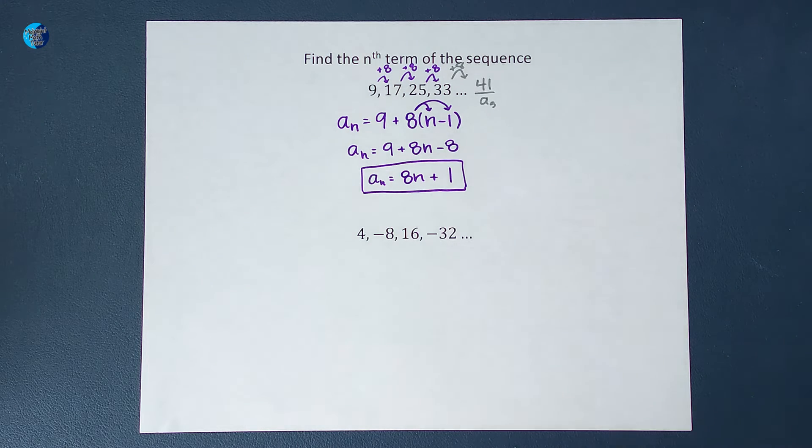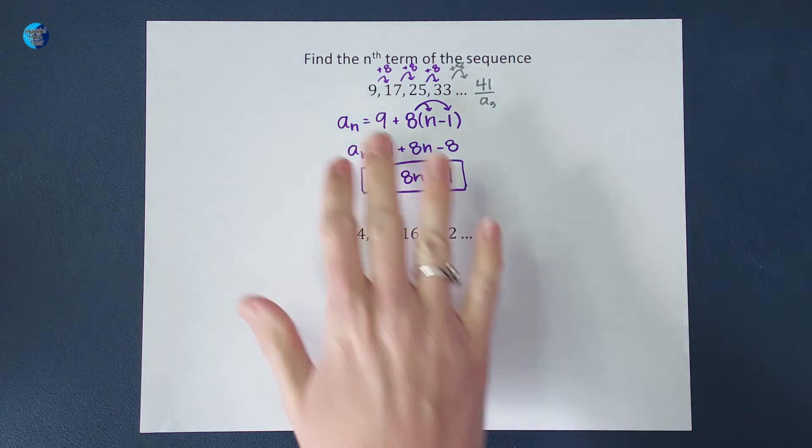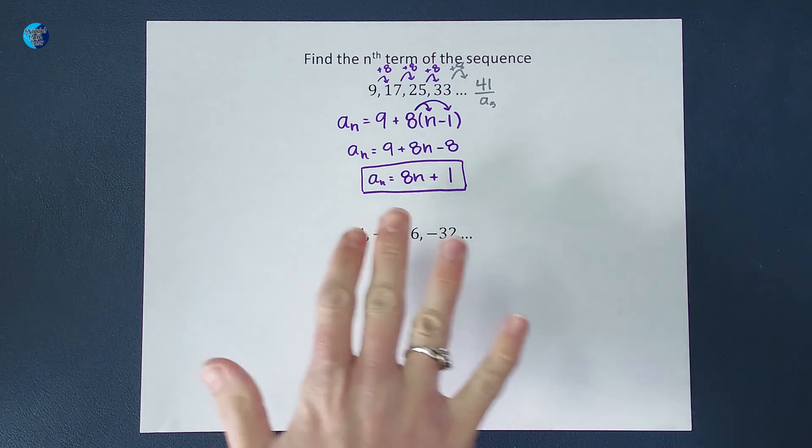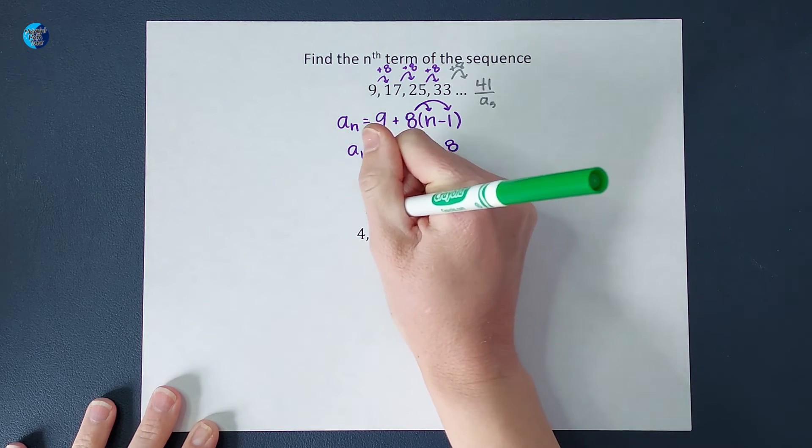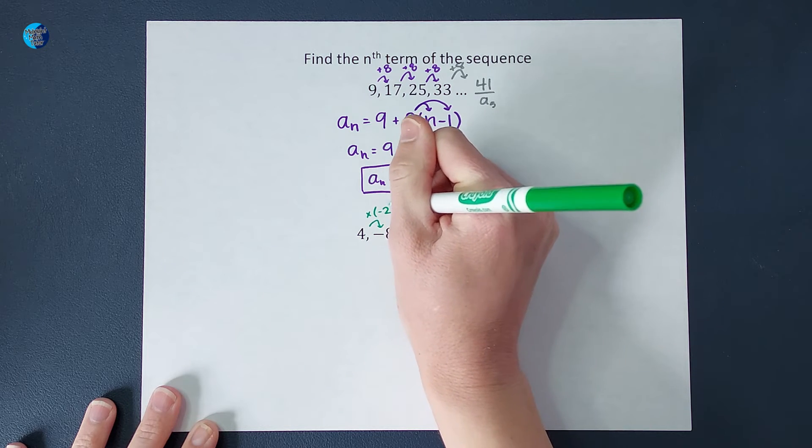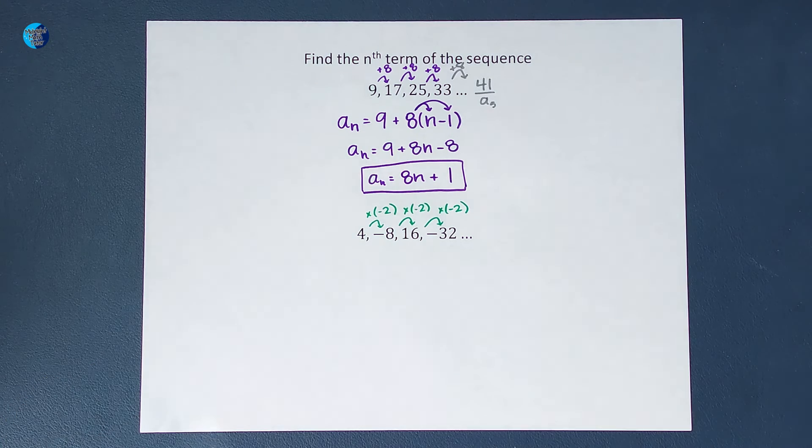Okay, but what about if we are multiplying each time, not adding? So for this one, if you look at it, you probably figure out pretty quickly that we are multiplying by negative 2 each time, which means this is a geometric sequence.